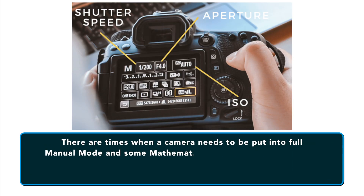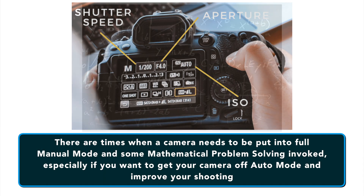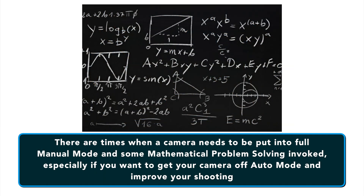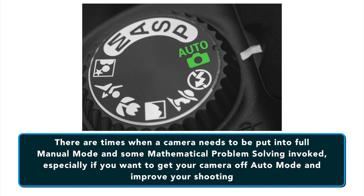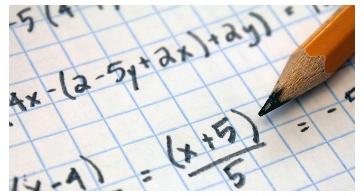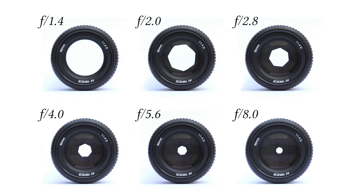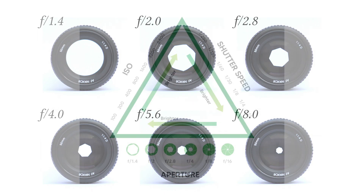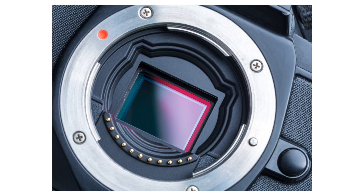Digital cameras have preset auto modes which work well in about 80% of situations for amateurs, but there are times when a camera needs to be put in full manual mode and some mathematical problem-solving gets invoked, especially if you want to get your camera off auto mode and improve your shooting. Photography is, in part, a lot of math. The main way we experience that math is the fractions and numbers involved in the amount of light let into the camera via shutter speed and aperture, and the sensitivity the sensor or film has to the light.